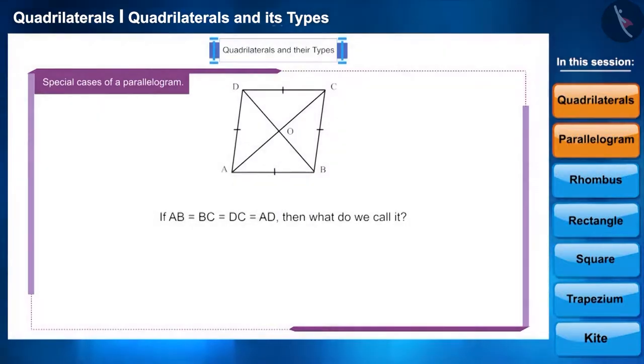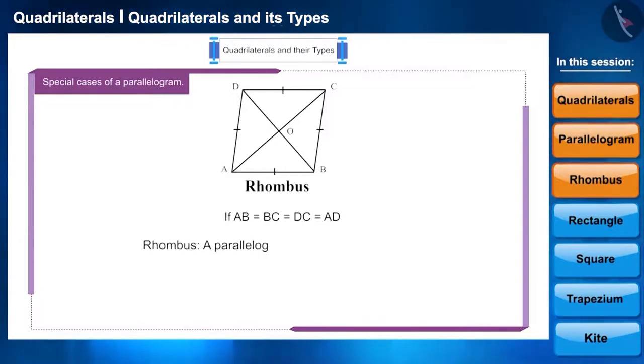Yes, these types of parallelograms are called rhombus, because a rhombus is a parallelogram whose all sides are equal. Its two diagonals bisect each other vertically.